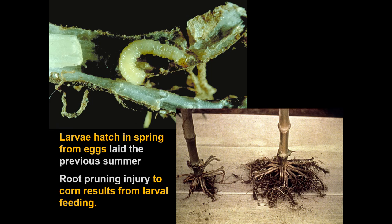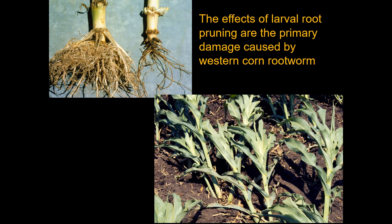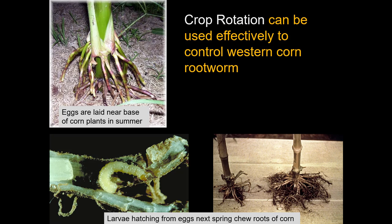Western corn rootworm has eggs that survive between seasons in the soil. Eggs are laid in summer at the base of corn plants and don't hatch until the next spring, when the larvae feed on roots. The root pruning they do can be quite extensive, which is why so much attention is given to controlling this insect in the Corn Belt. Root injury makes plants more susceptible to drought stress, reduces yield, and causes lodging — plants fall over because they lack a supporting root structure — which is a problem particularly with mechanical harvesting.